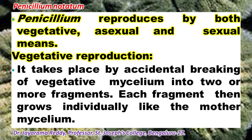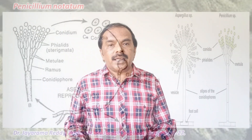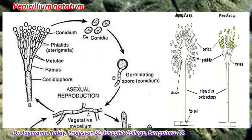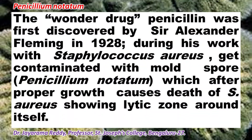Once conidia fall on a suitable substratum, they germinate by the production of a germ tube. Penicillium also reproduces by sexual methods, but that is very rare. Penicillium is a member of Ascomycetes, and thus it reproduces sexually by means of ascus in which ascospores are produced.